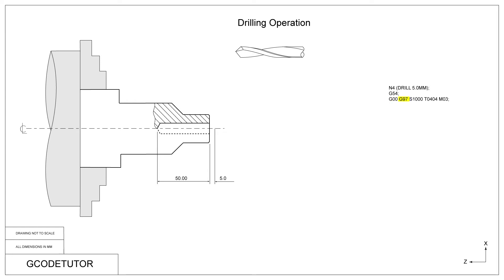G97 tells the machine that we are in normal revs per minute mode regarding the spindle speed. The alternative is G96 which is constant surface cutting speed, explained in different parts of the course. In this case G97 tells the machine we're using 1000 RPM spindle speed and it maintains that as accurately as it can throughout the drilling process. The T value defines the tool number and the offset number — in this case tool 4 and offset 4. Our drill is in position 4 on the machine turret, which is why we use N4 as our search value. Finally, we turn the spindle on in a clockwise motion using M03.